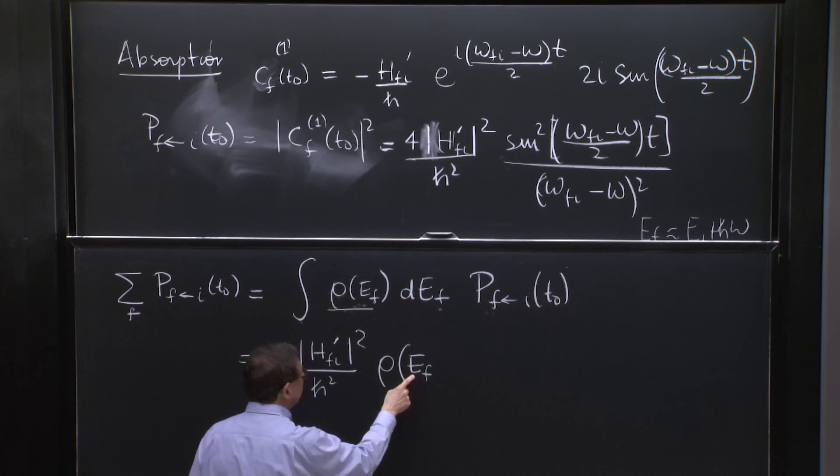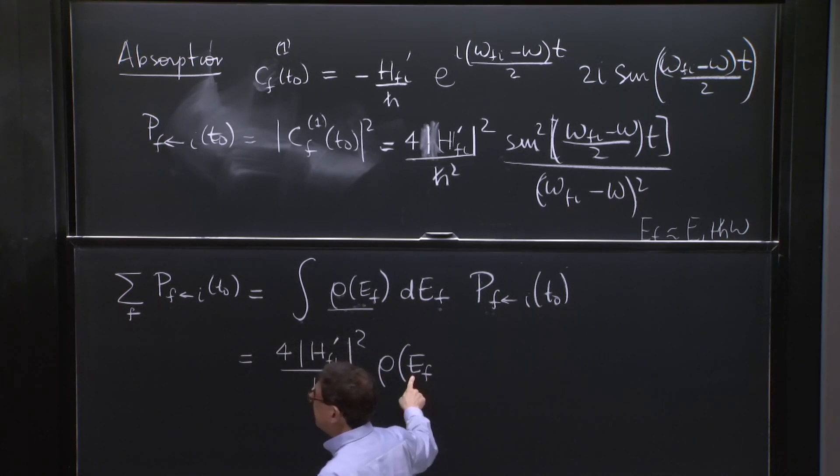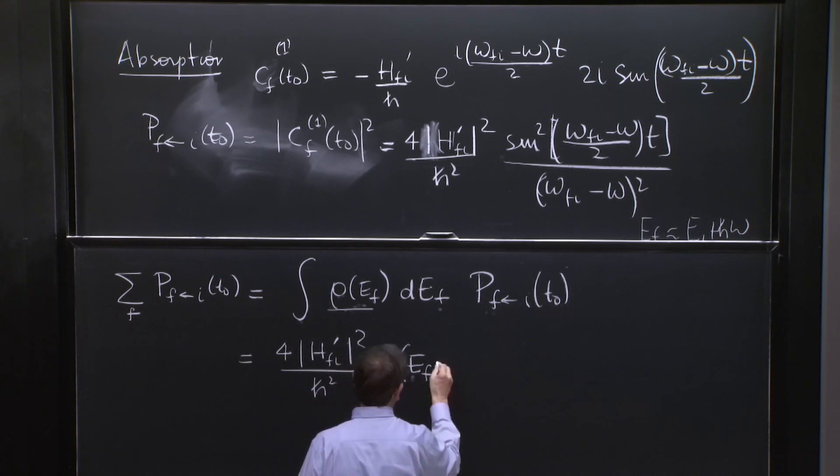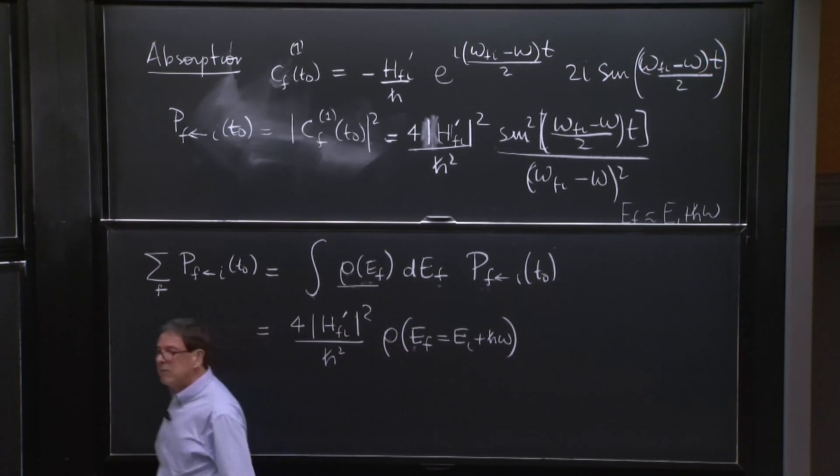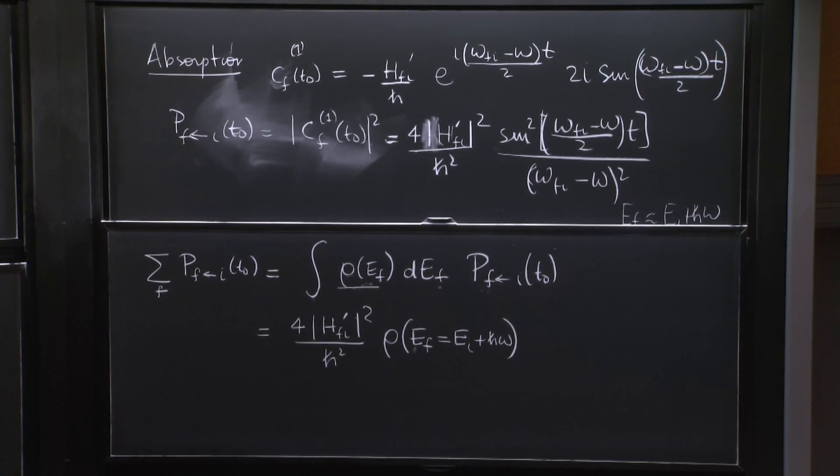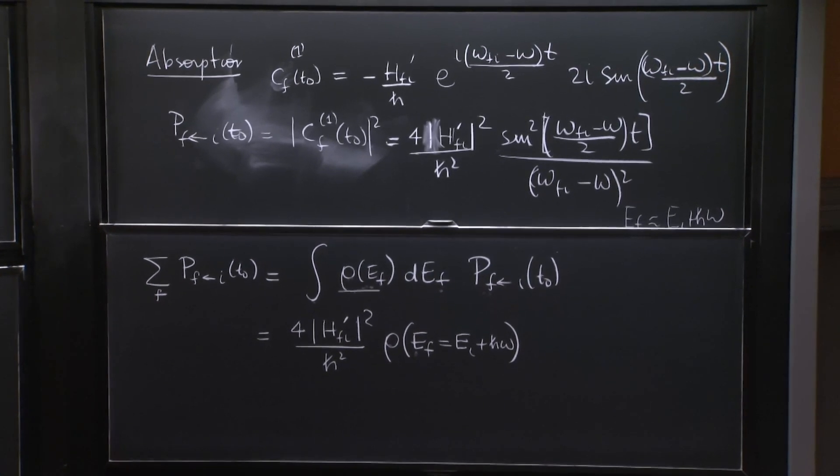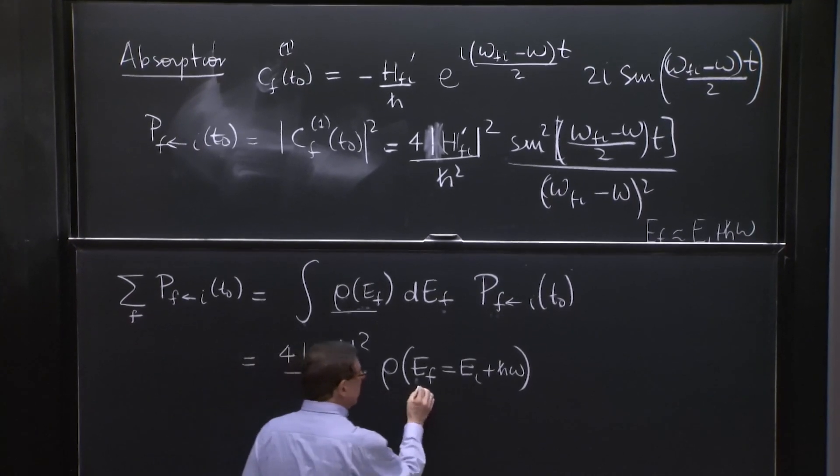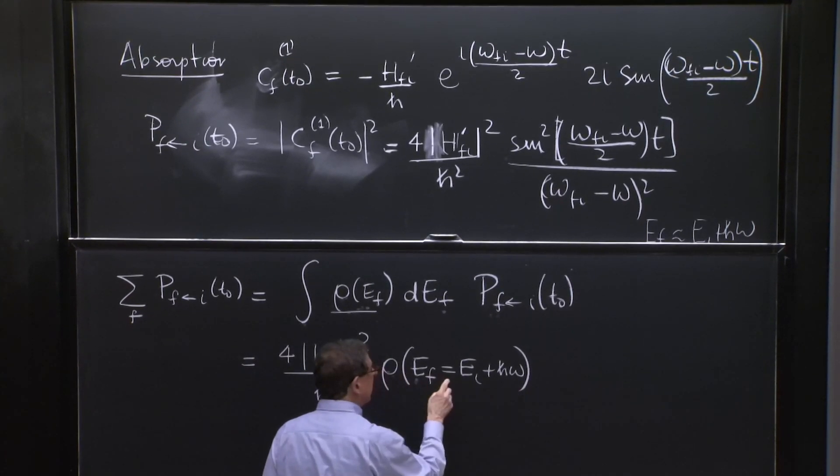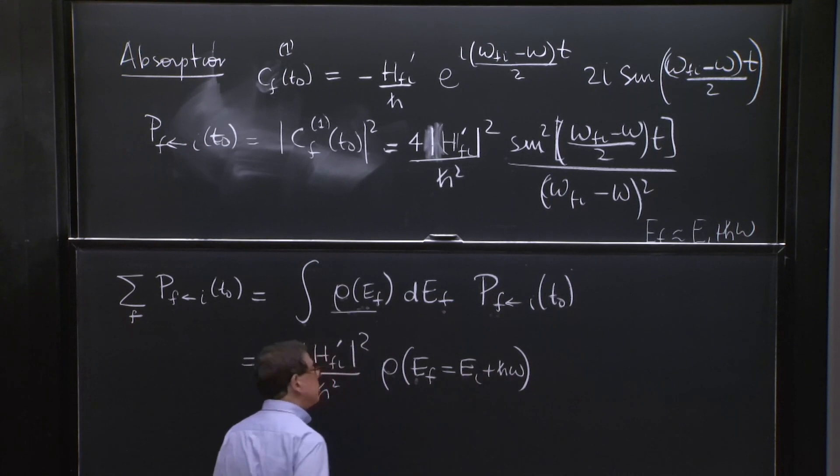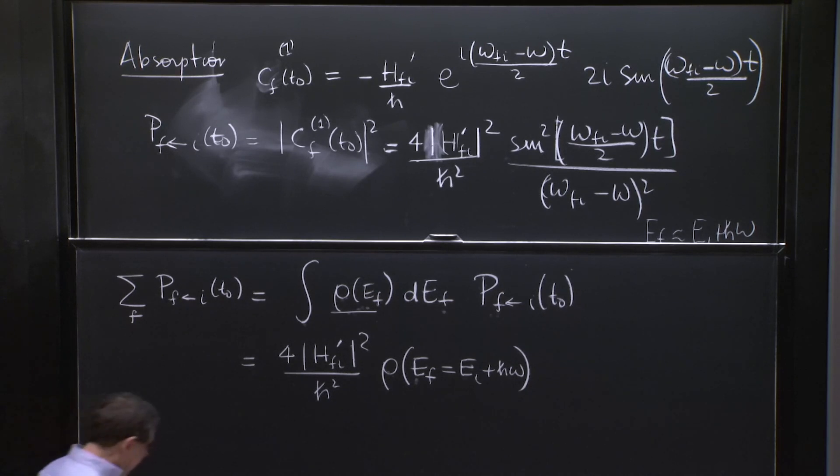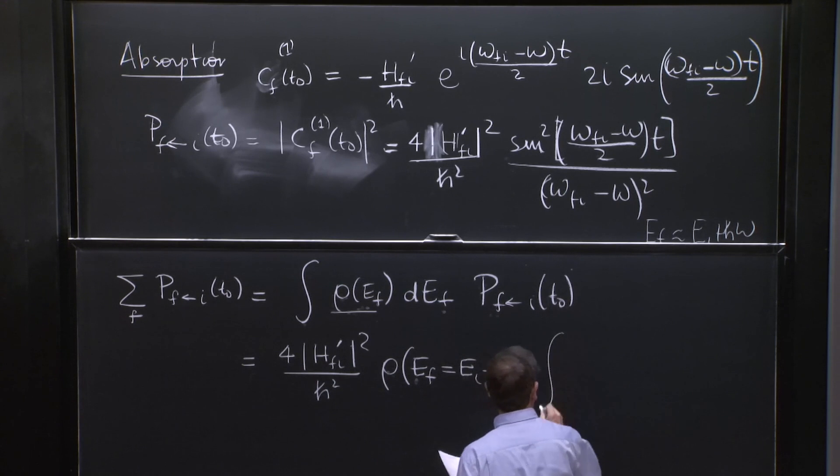And in this case, Ef, we're doing absorption. So this is equal to Ei plus h bar omega. That's the central contribution. And that's where you're taking rho out. So this is pretty important. This rho is evaluated at the final energy, which in this process, is h omega in addition to Ei.